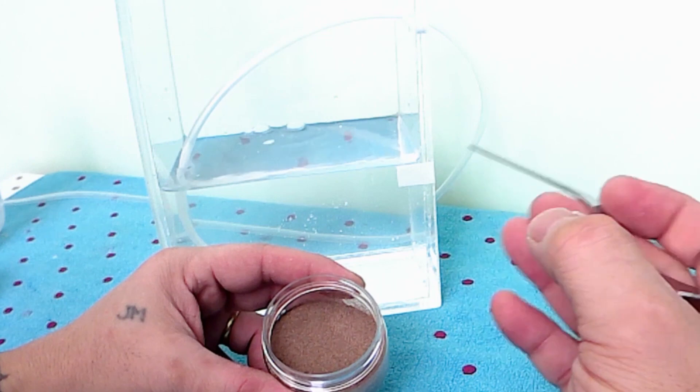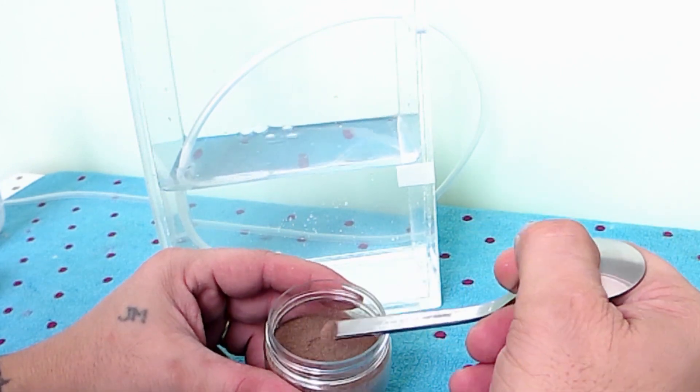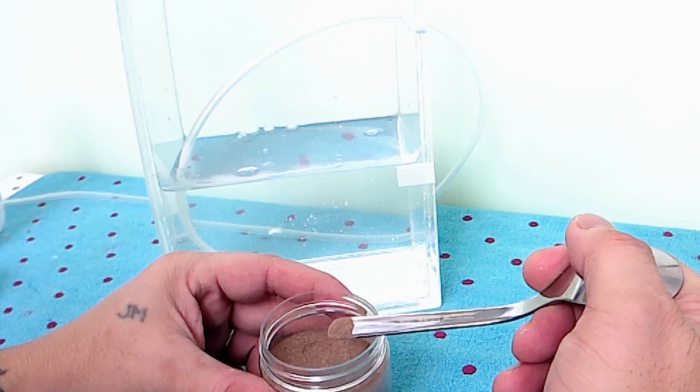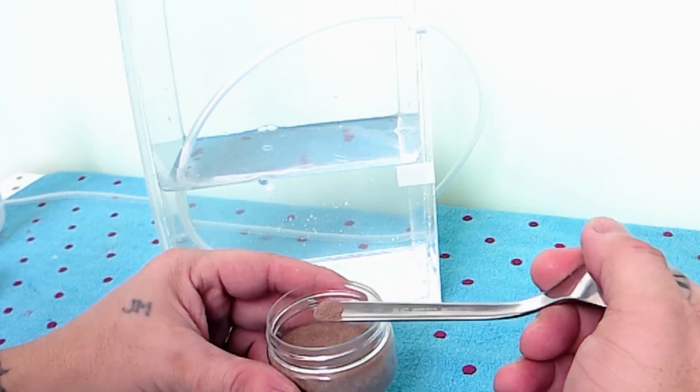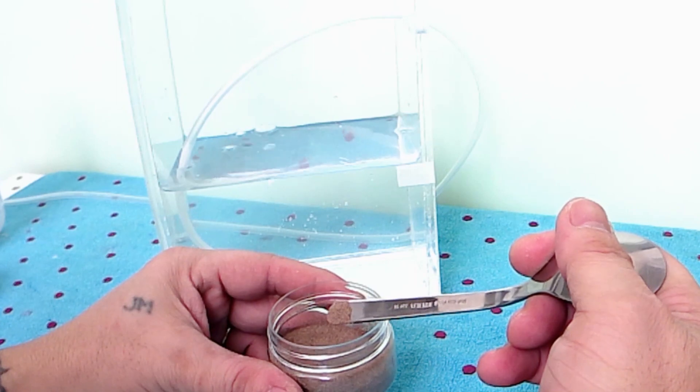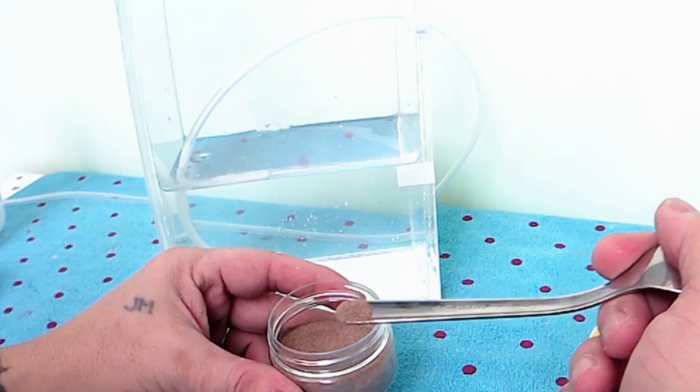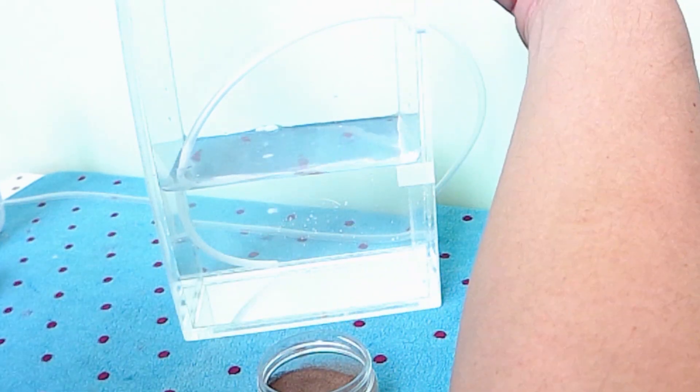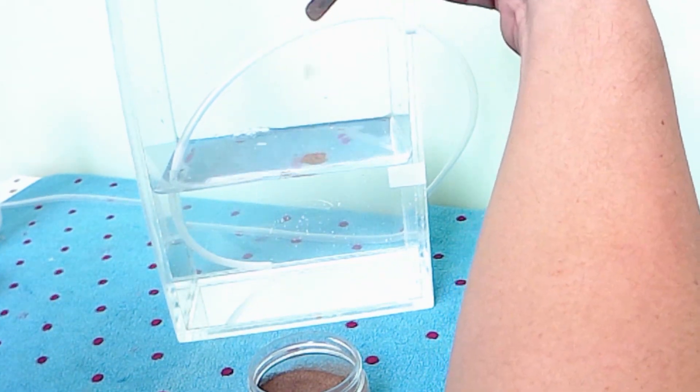We need only a small amount of eggs. I use the handle of the teaspoon to control the amount easily. OSI brine shrimp eggs have a good hatching rate. I highly recommend this brand.